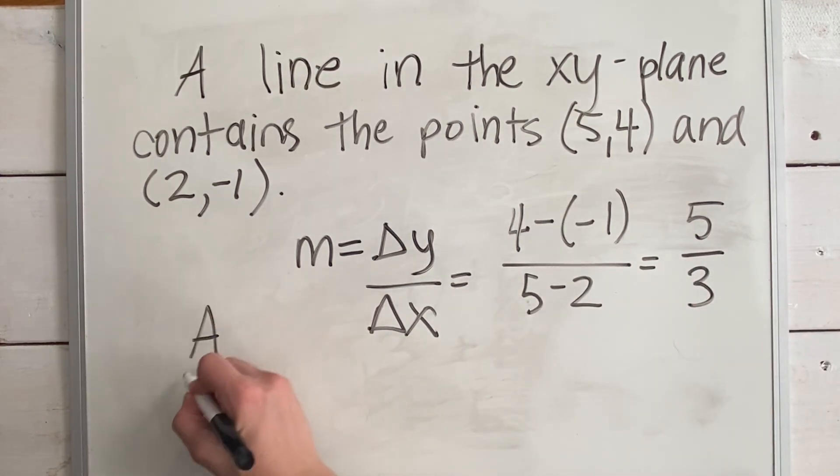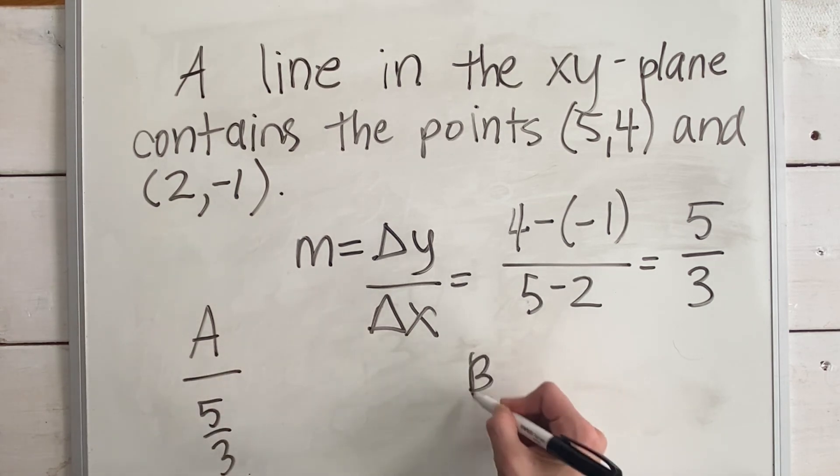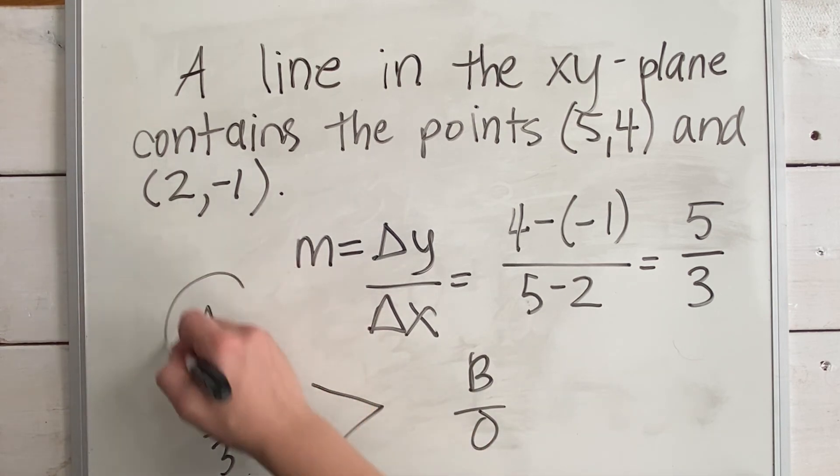Now we have our quantity a, five thirds, and remember our quantity b was zero. We can easily see that five thirds is greater than zero. So our answer will be a. A is greater.